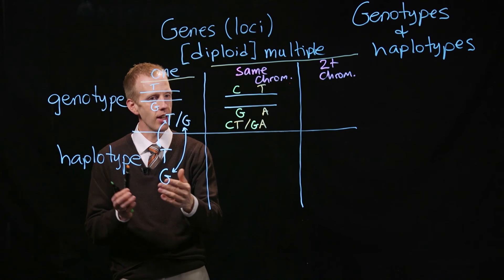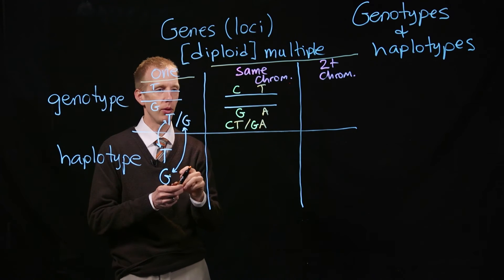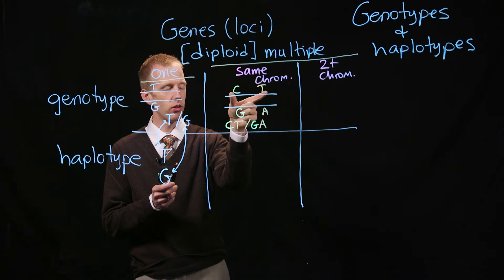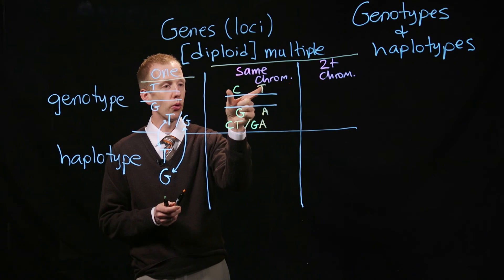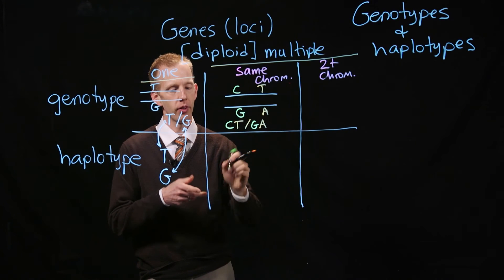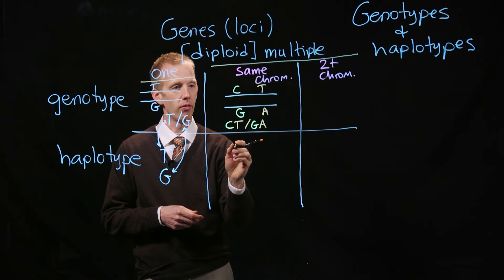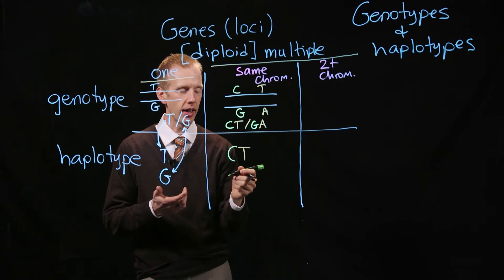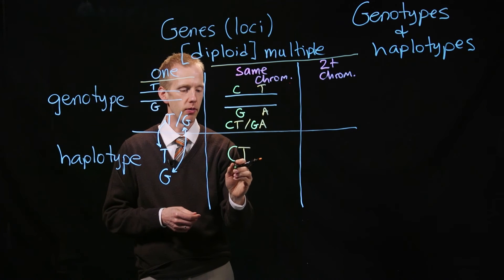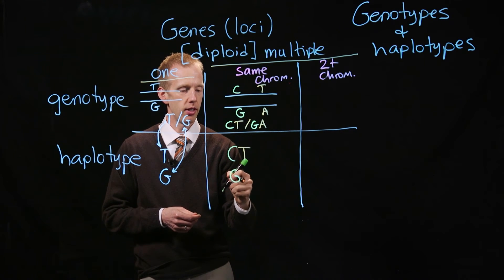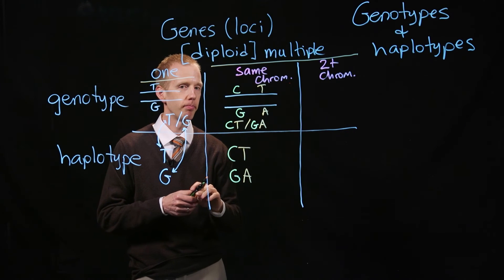Just like the first example, everything on one side of the slash — the genes on one physical piece of DNA — are one of the haplotypes: CT. The second haplotype that this individual has is GA.